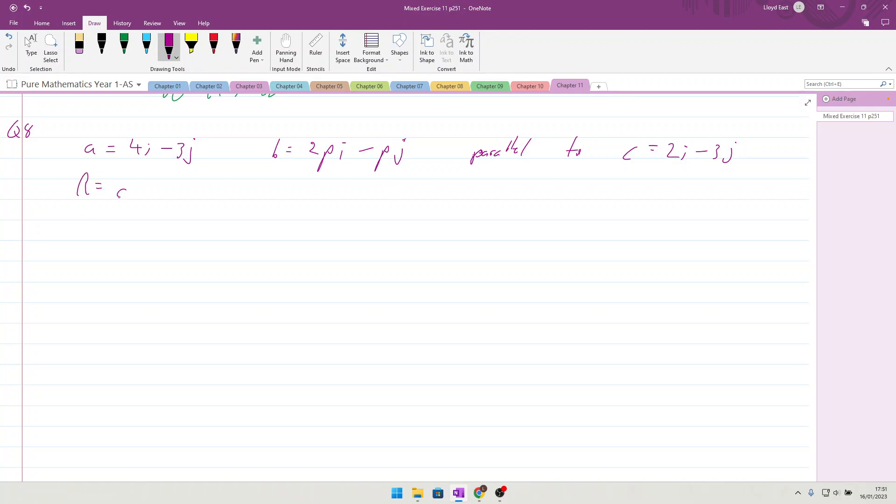So the resultant is parallel to A plus B, which is going to be 4 plus 2p i and minus 3 plus p j. And that is parallel to the 2i minus 3j.